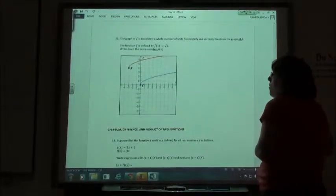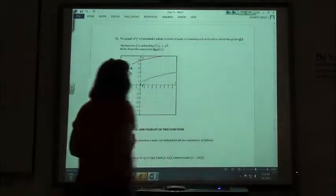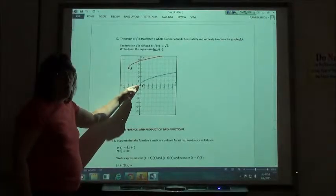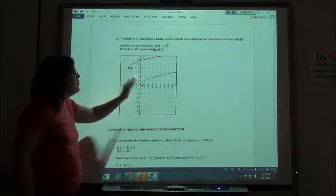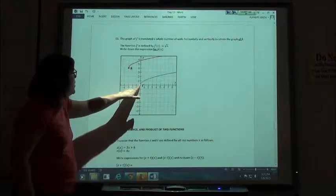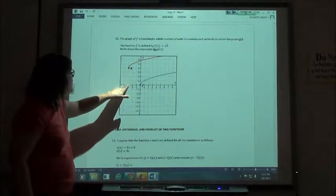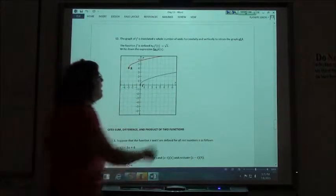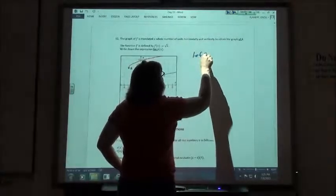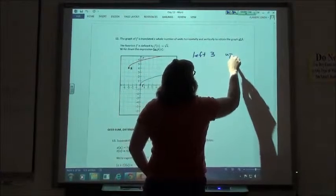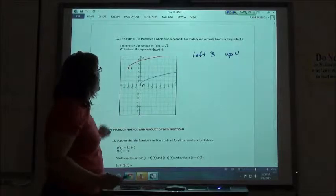Number 12. This time we have a square root function. Always the original one starts at 0, 0 because there's no shift to it. So this one we want to go 3 to the left and 4 up.